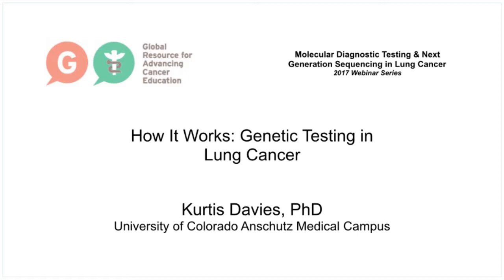This video is going to talk about how genetic tests work. In past videos I've discussed basic cancer cell biology including driver mutations and how they lead to activated proteins that result in unregulated tumor cell growth, and I've also discussed how targeted therapies are now available that directly target these activated proteins. But to receive these new targeted therapies, it must be determined whether or not certain mutations exist in certain genes in your tumor cells. In this video I'm going to describe how the genetic tests work that determine if these mutations exist in an individual's tumor sample.